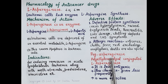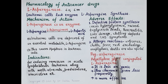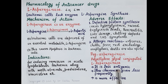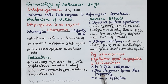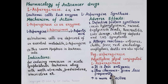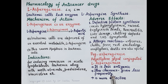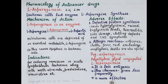L-asparaginase is conjugated with polyethylene glycol to produce PEG-asparaginase. This formulation is less antigenic and produces fewer allergic reactions. It is also slowly cleared from the body, giving it a longer half-life, so it is given less frequently. Additionally, PEG-asparaginase is more effective than the unconjugated form.